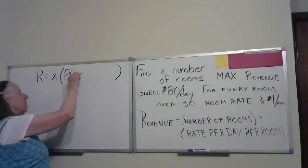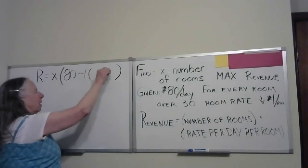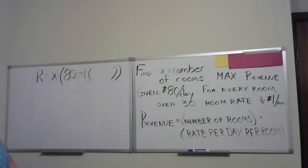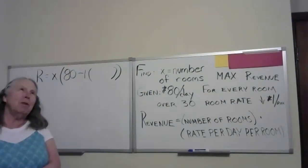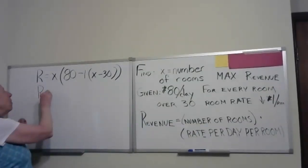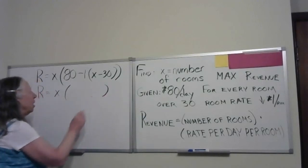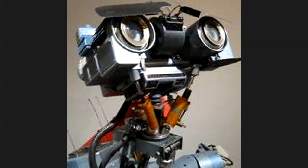R equals x. Now how are we going to figure out the rate per day per room? It certainly starts out at 80, but then what happens? After 30 it drops. It's minus $1 times how many are over 30. So if I have 50 rooms, how many of them are over 30 rooms? 20. How did we calculate that? x minus 30. So we have R equals x times 80 minus x minus 30. Let's simplify the expression inside the parentheses. So it would just be 110 minus x. Does everybody agree with that?